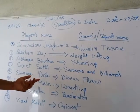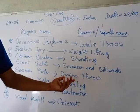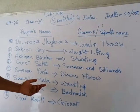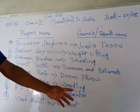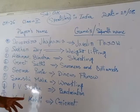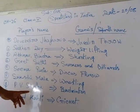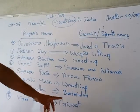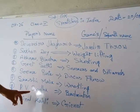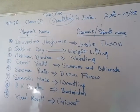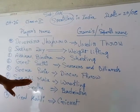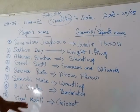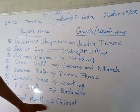Seema Punia is famous for discus throw. Sakshi Malik is famous for wrestling. PV Sindhu is famous for badminton — she is a famous badminton player and a sports star of badminton.